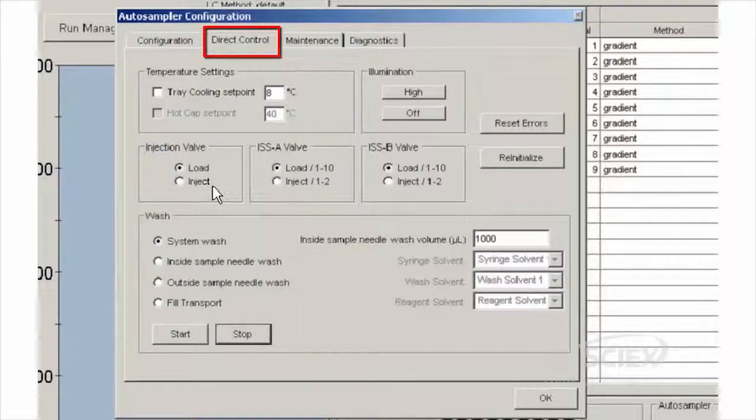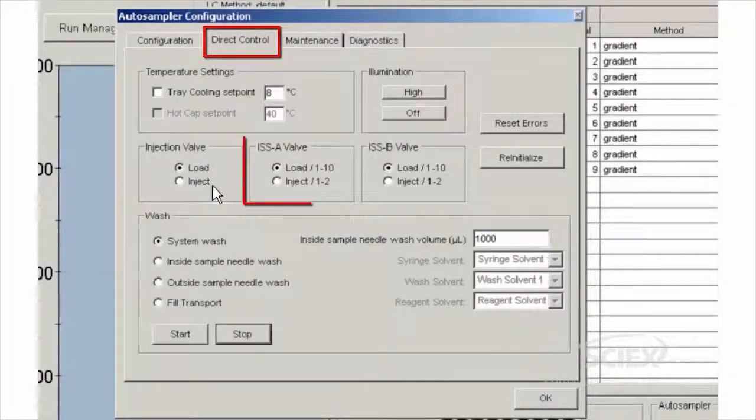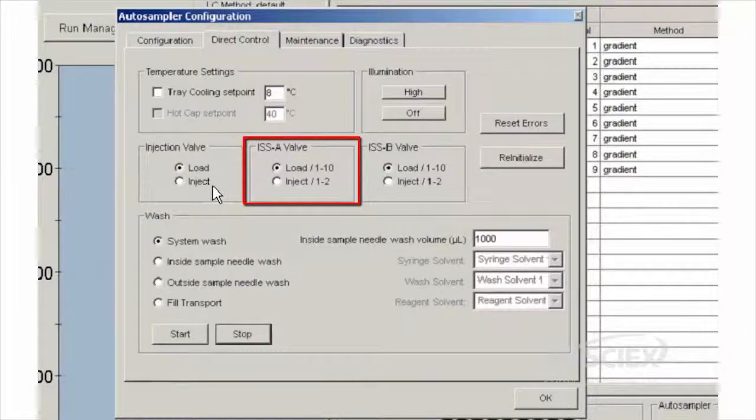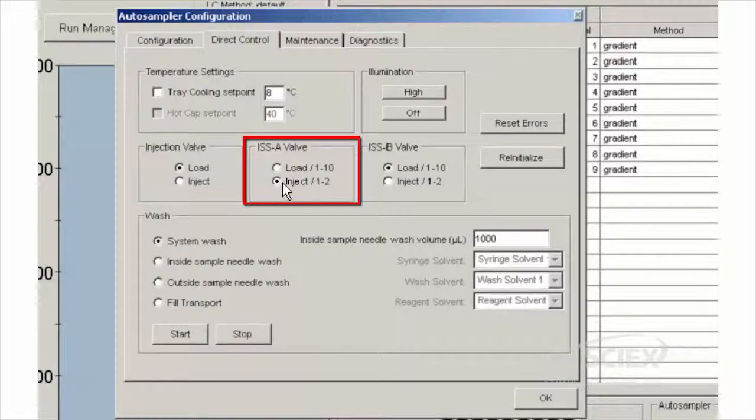Using the auto sampler configuration window, click the direct control tab, injection valve group. Switch the valve position between inject and load 10 times to set the valve stops.